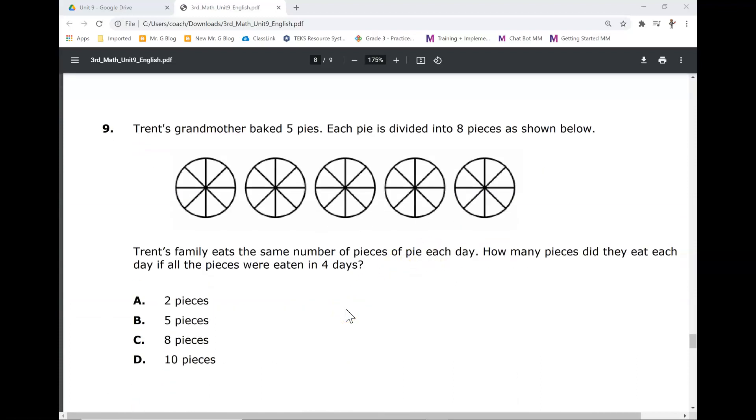Number nine. Trent's grandmother baked five pies. Each pie is divided into eight pieces as shown below. Trent's family eats the same number of pieces of pie each day. How many pieces did they eat each day if all the pieces were eaten in four days?